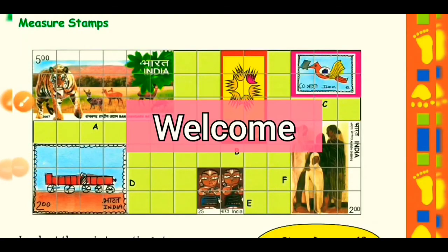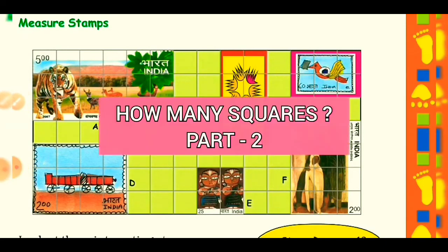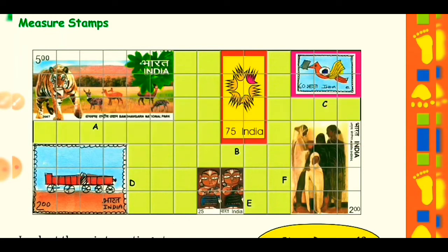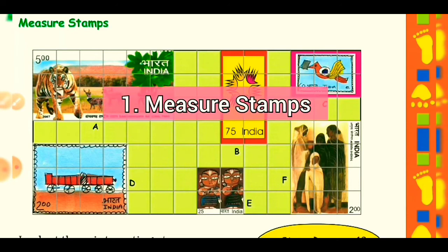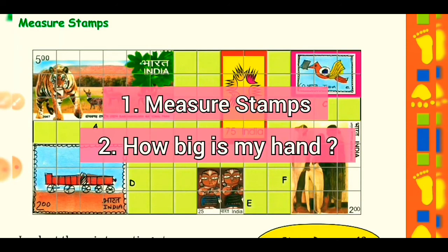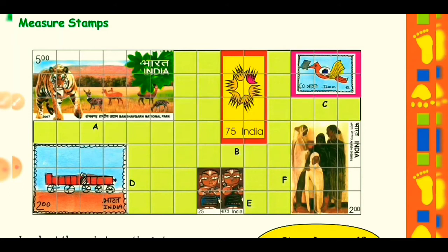Hello dear students and welcome back to this online class video. This is the second part of the third chapter - 'How Many Squares' - of Class 5 subject Mathematics. Let's start the class. Here is an overview of today's class: I have taken only two topics. The first is 'Major Stamps' and the second is 'How Big is My Hand.' These two topics are related to area.